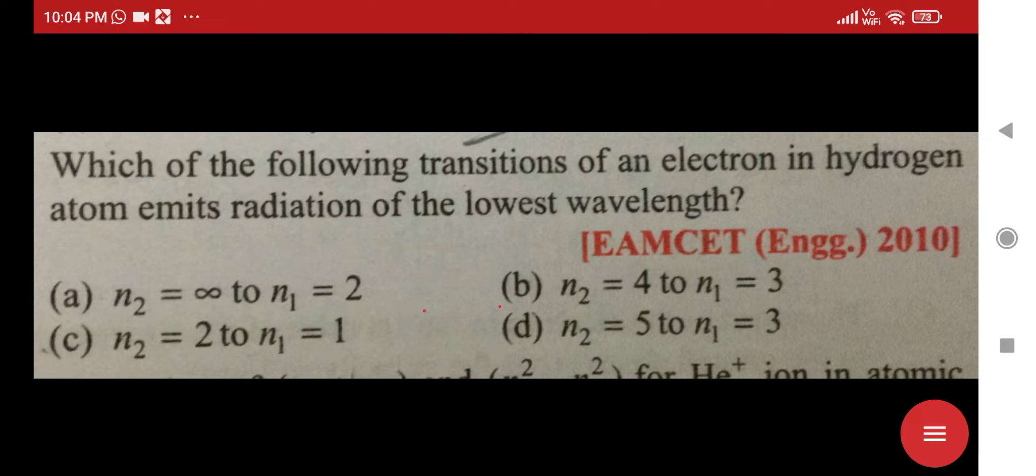Which of the following transitions of an electron in hydrogen atom emits radiation of the lowest wavelength?